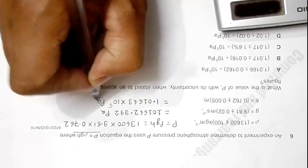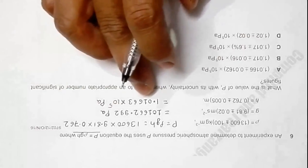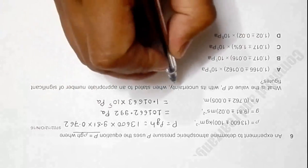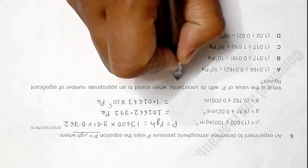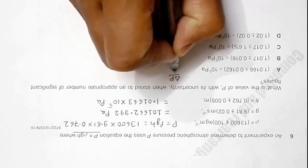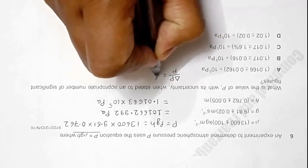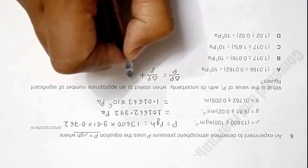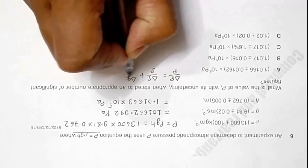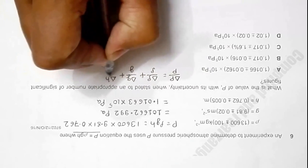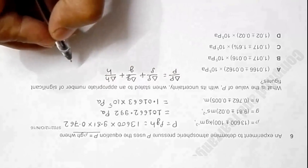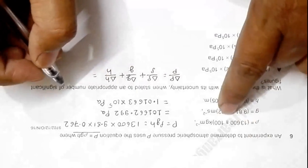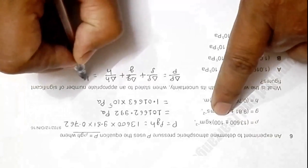Now I need to find the uncertainty. So ΔP by P should be equal to Δρ by ρ plus ΔG by G plus ΔH by H.